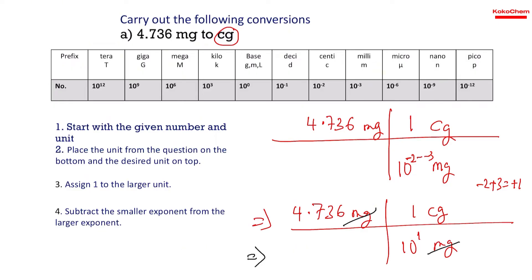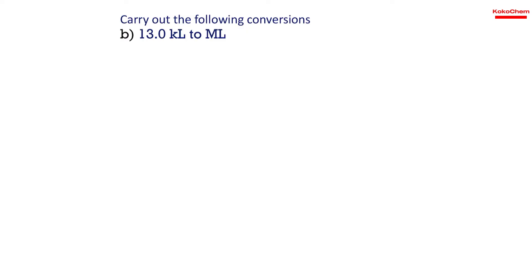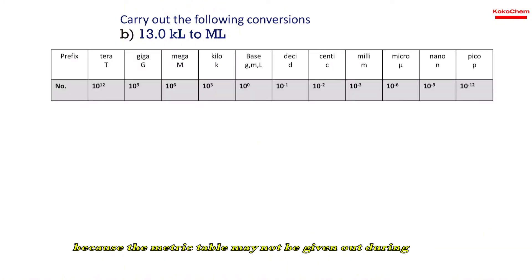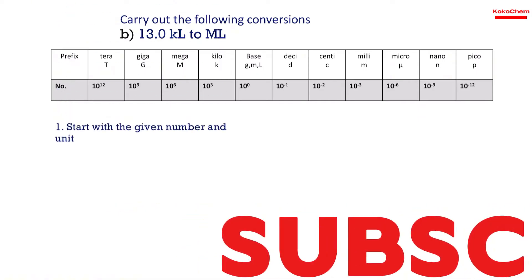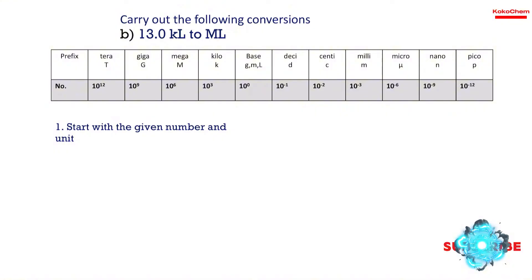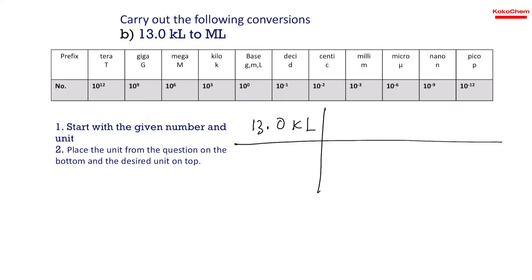The answer is 0.6 centigrams. Now try another example: 13.0 kiloliters to megalitres. You should be able to remember the mnemonic and write down the metric table. Step 1: Start with the given number and unit — 13.0 kiloliters. Step 2: Place the unit from the question on the bottom and the desired unit on top.